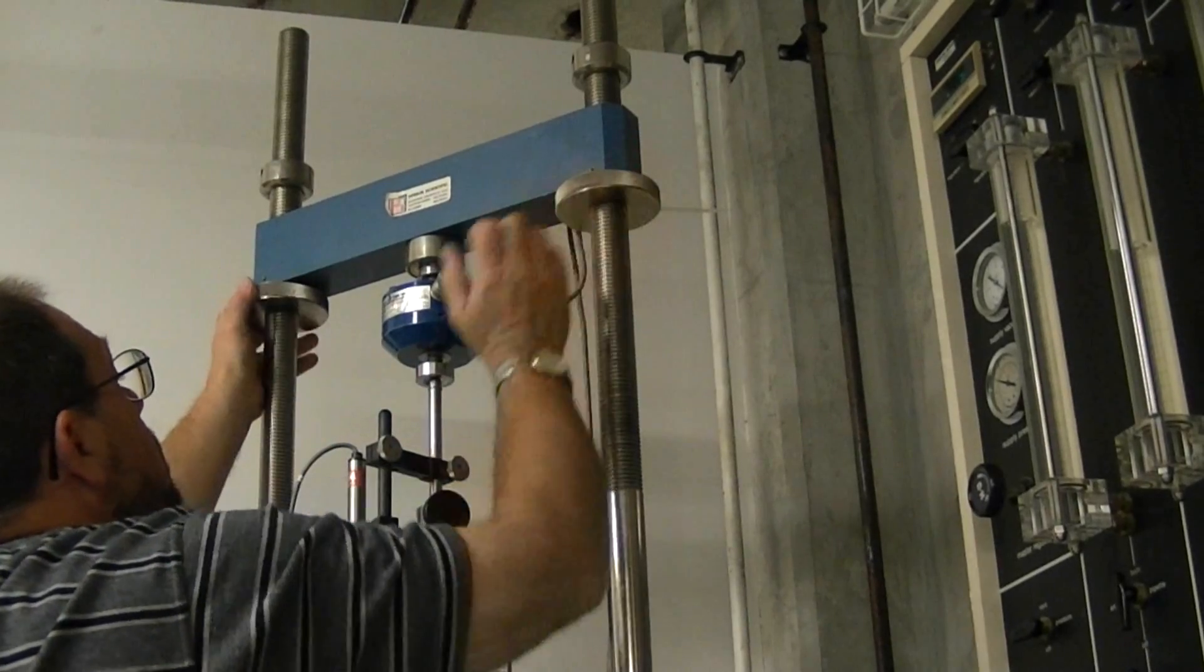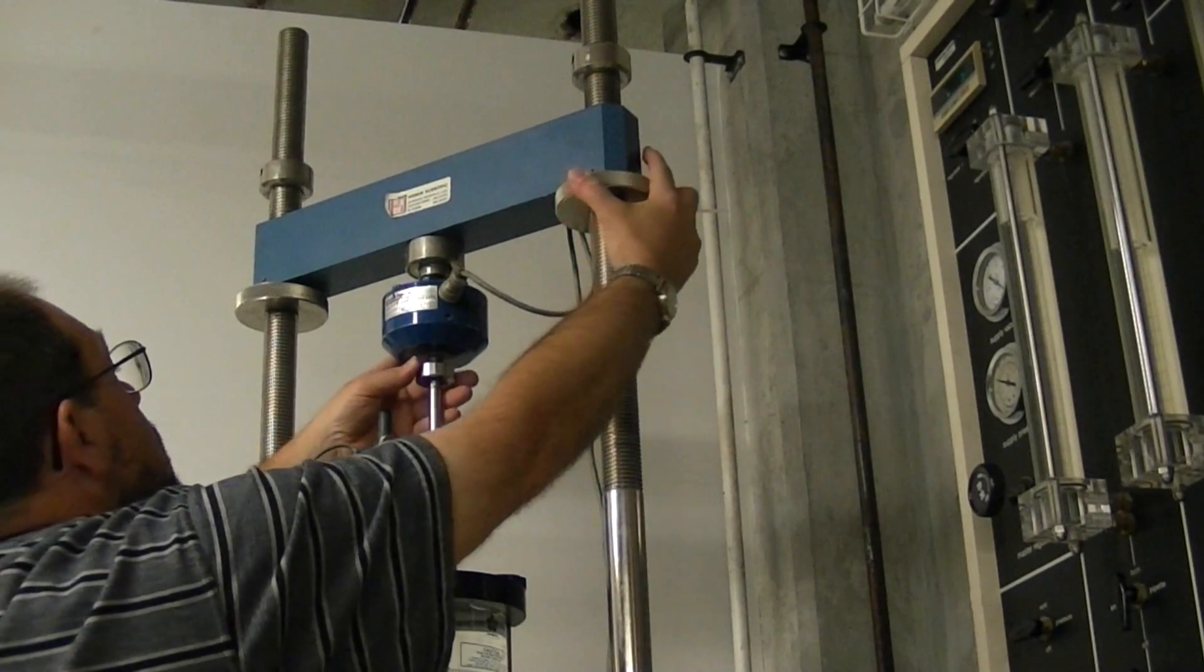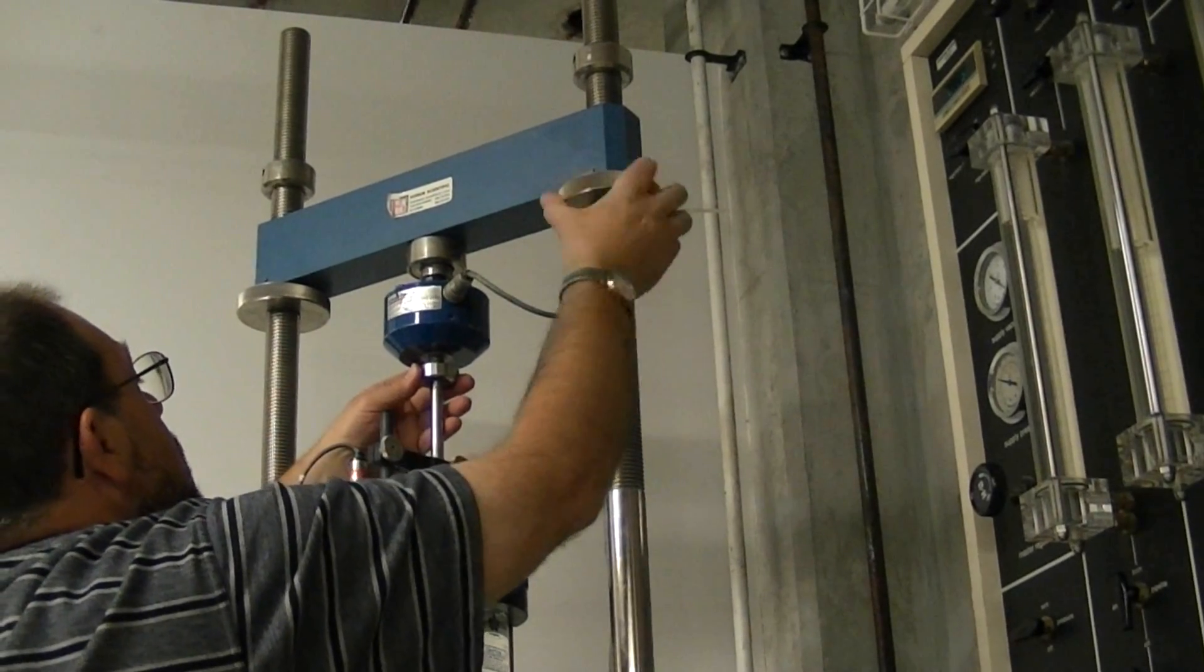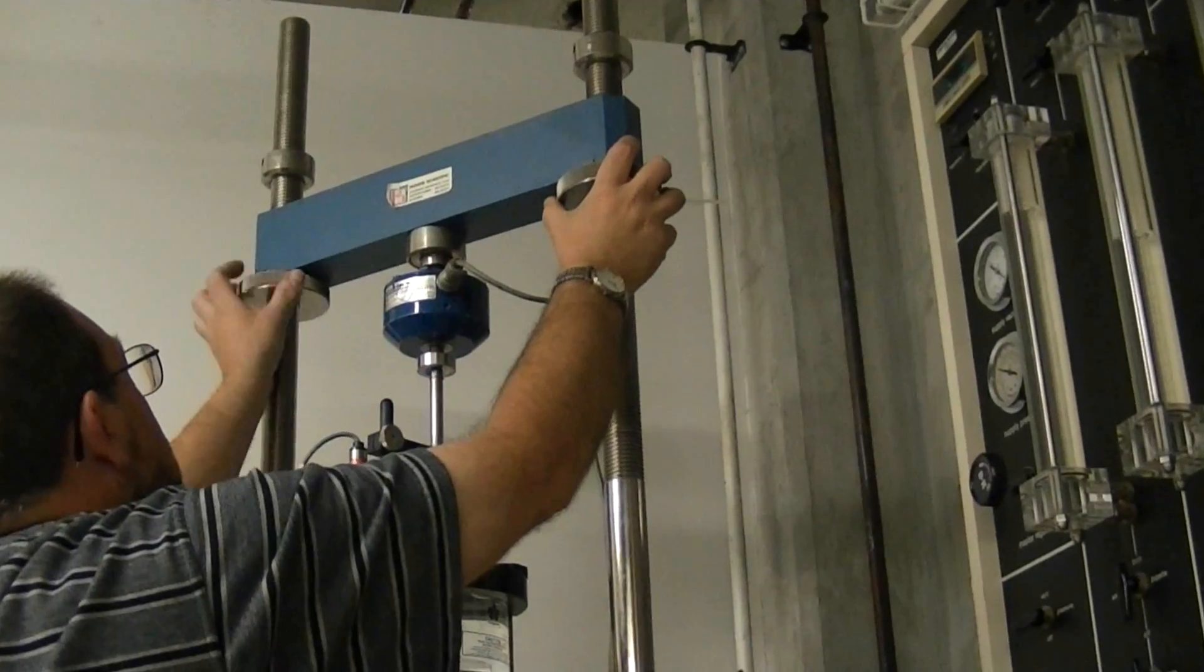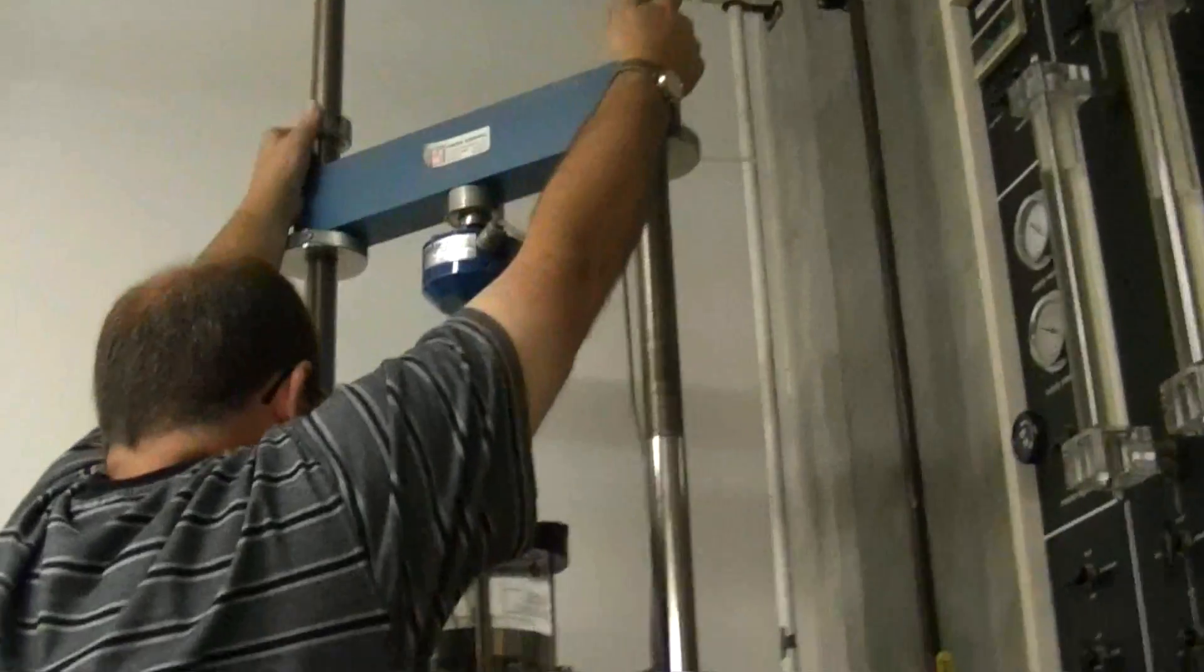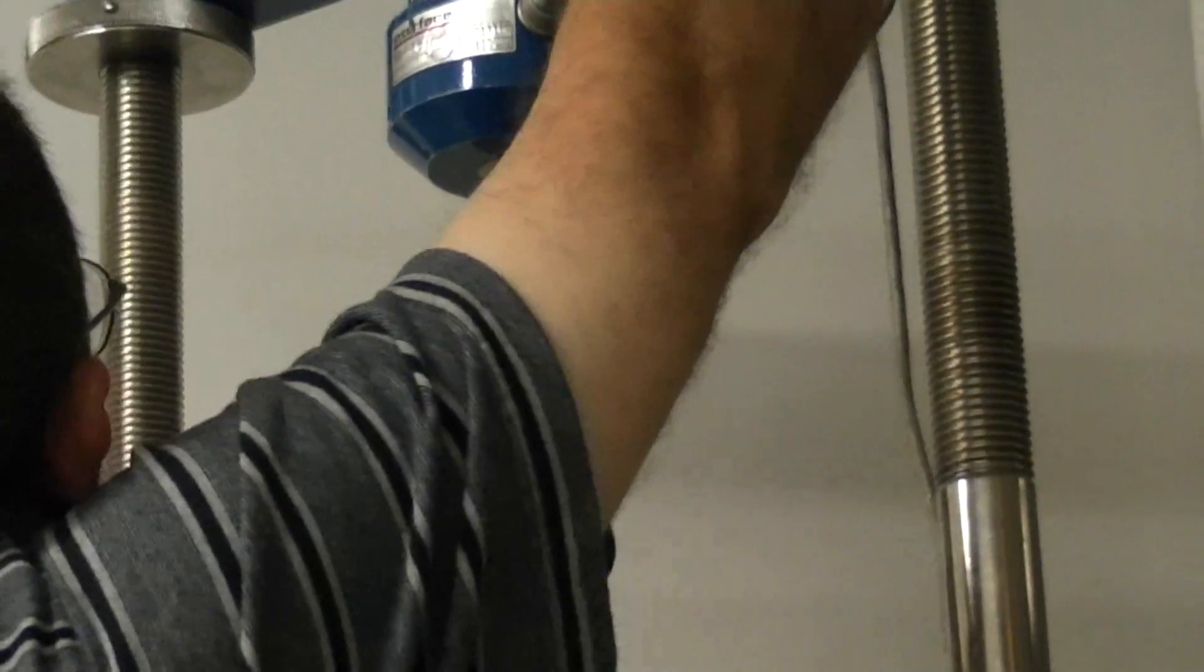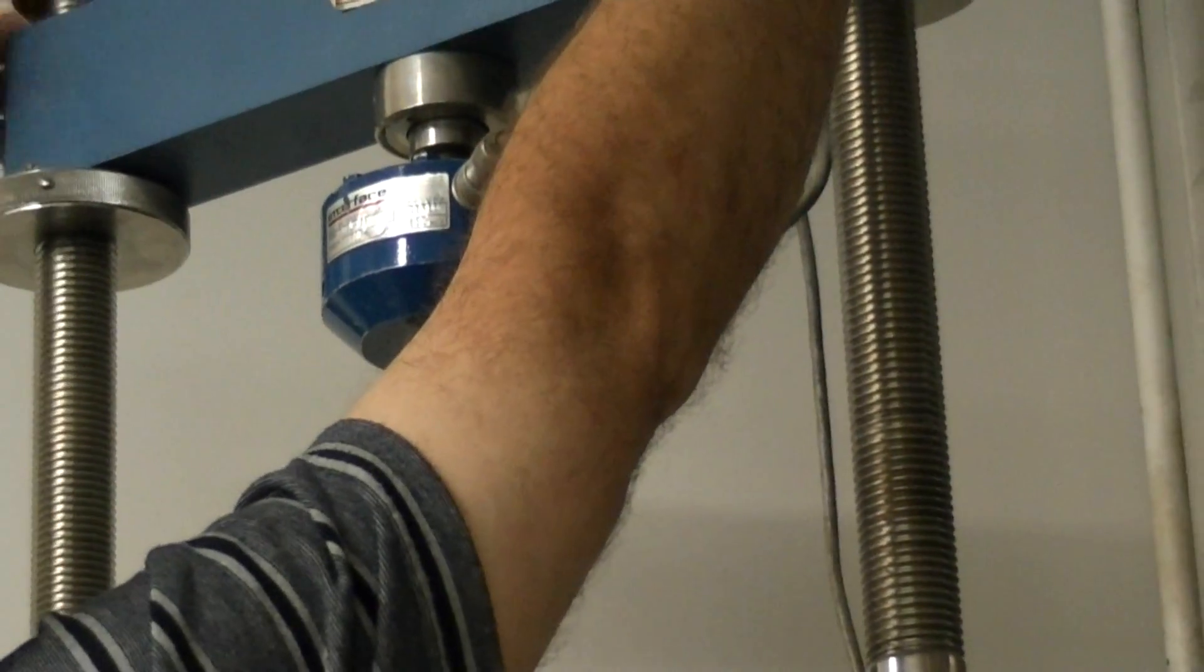Now we're lowering the load cell onto our testing mechanism. It's going to be loaded from the bottom, and the load cell in blue will record the axial load.